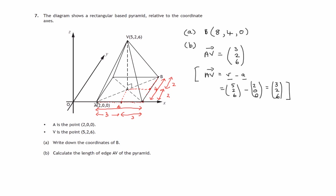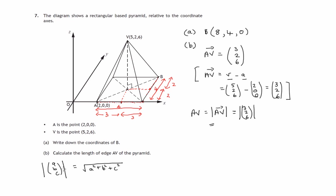The length of edge AV — without an arrow, denoting magnitude — is the magnitude of the vector from A to V. So that's the magnitude of (3, 2, 6). For a vector with components a, b, c, the magnitude is the square root of the sum of the squares: √(a²+b²+c²). In this case, √(3²+2²+6²) = √(9+4+36) = √49 = 7.